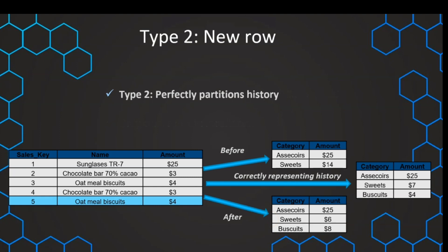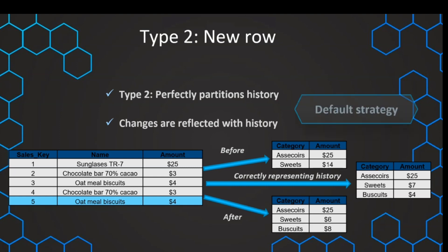This is the problem that slowly changing dimension Type 2 is solving. With that type, we can perfectly partition and segment our history. Previous values can still be associated to a previous category or a previous dimension value, and then from a moment in time we can associate this to a new value. This is what we want to have in our data warehouse, because history is very important and we want to maintain it. So whenever we are expecting common changes in our dimensions, this is the default strategy to go to, and it is so powerful because it perfectly partitions our history.